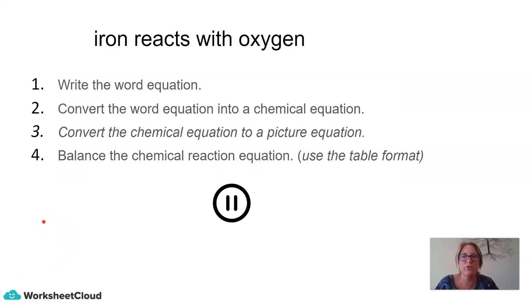So, what I would like you to do is we are looking at iron reacting with oxygen. So, I would like you to write the word equation. Then, I would like you to convert the word equation into a chemical reaction. And then, I want you to convert the chemical reaction into a picture equation. And then, I would like you to balance the chemical reaction equation, preferably using a table format. If you have only joined our lesson now, it might be hugely beneficial and helpful if you go back and look at our previous lessons on balancing equations and our previous lessons on compounds and the naming of compounds. And it will help you with balancing equations. So, pause the video now and answer these four questions, please.